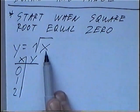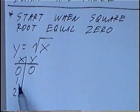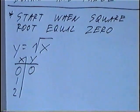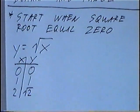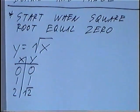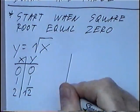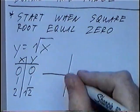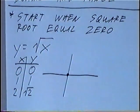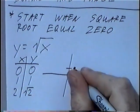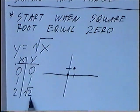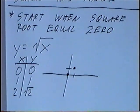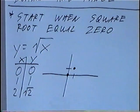If you plug in zero, the square root of zero would be zero. With a one, the square root of one would be one. Plugging in two, the square root of two would be the square root of two. You can either use a calculator to get the decimal or estimate — the square root of two would be a little bit above one.